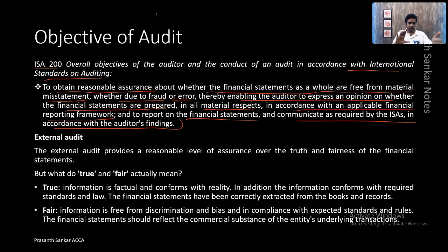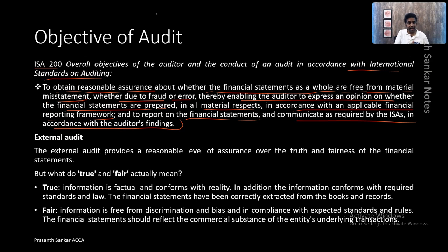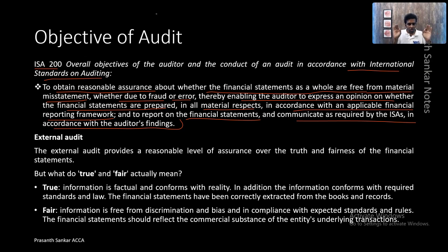The objective of the auditor is to review the financial statements and check whether they are free from material misstatement. Material misstatement could be due to fraud or due to error. He will gather evidence to obtain his conclusion — his opinion. Based on his opinion, if the entire financial statement is free from material misstatements, he will give a true and fair opinion to the user. The primary objective of an auditor is to express an opinion.